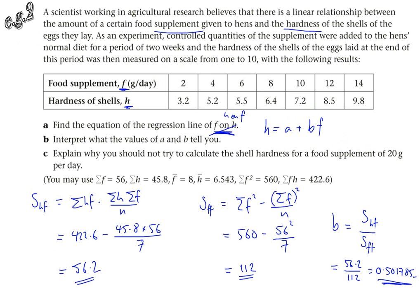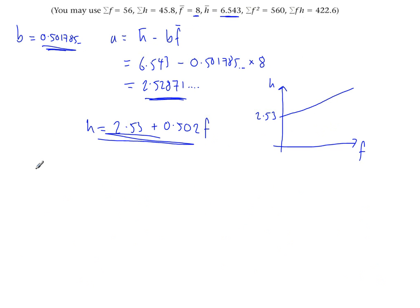The next part of the question is asking to interpret what the values of a and b tell you, a bit like we were asked just now. So a, well a is the h intercept. This tells me what the hardness of the shell is when the food supplement is 0. That's the natural shell hardness. It's the shell hardness when there is no supplement given. My handwriting is deteriorating, I apologize for that. With no supplement, we get 2.53 hardnesses.